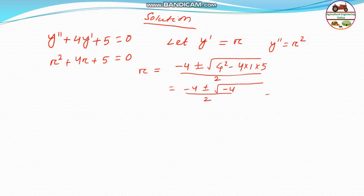So that will be equal to minus 4 plus or minus the square root of minus 4, divided by 2. This simplifies to minus 2 plus or minus the square root of minus 1. Since square root of minus 1 is the complex number i, the roots are minus 2 plus or minus i.